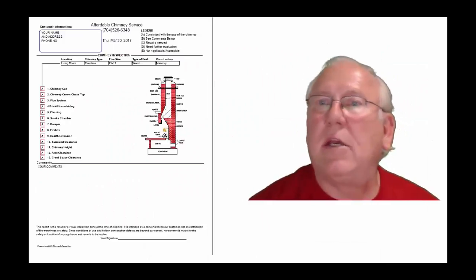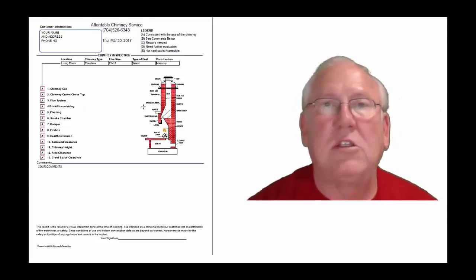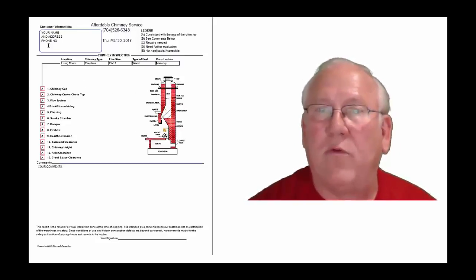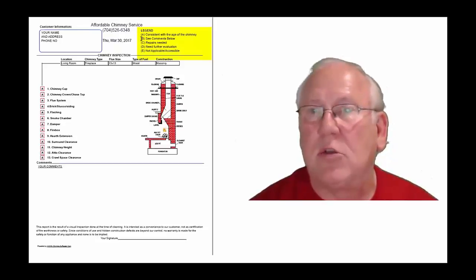Okay. Now let's take a look at the inspection report and see how it reads out. This is a generic report. This is exactly what you will get. Only your information will be filled into all these blanks. The upper right-hand corner of the report is the legend.